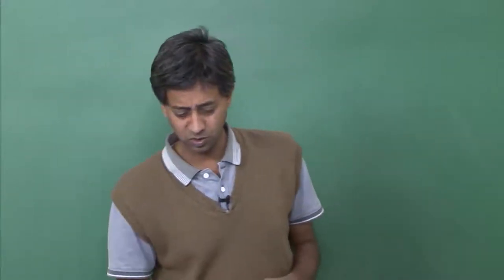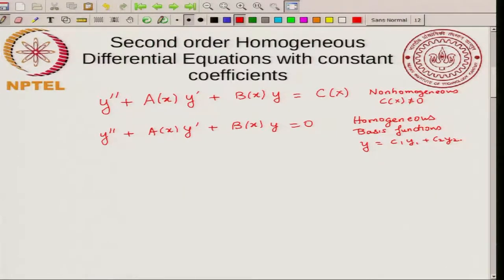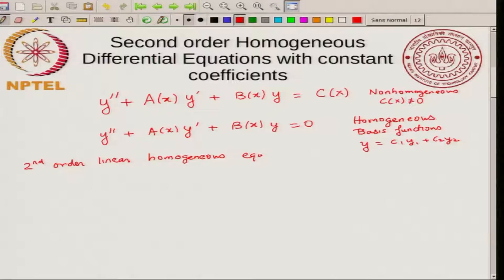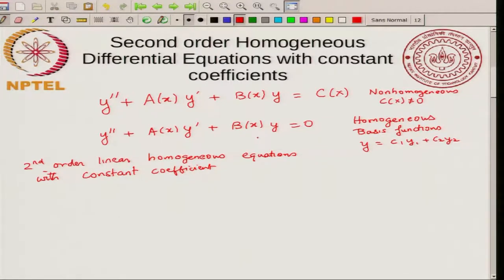Today I want to first start the discussion of a special type of homogeneous linear second order differential equation: those with constant coefficients. What do we mean by constant coefficients? The A of x and B of x are constants — they are in general functions of x, but if these functions are constant then you get a second order homogeneous equation with constant coefficients.